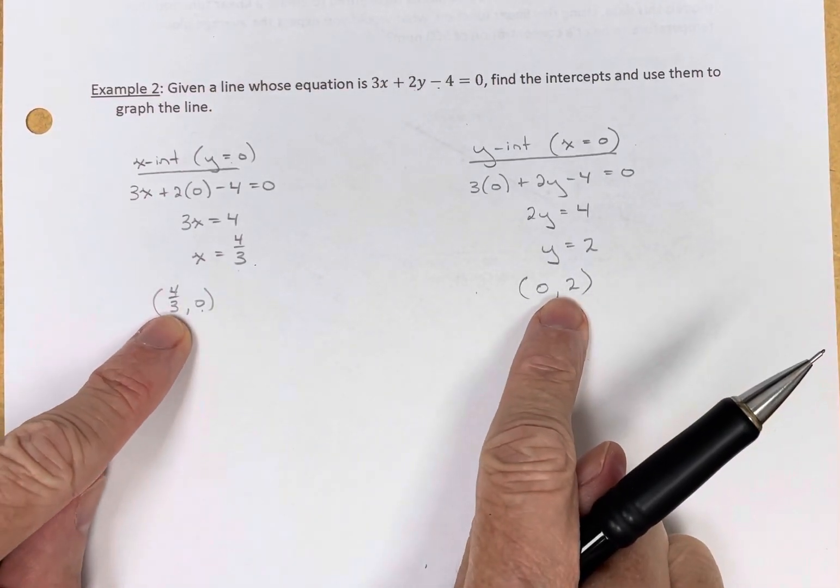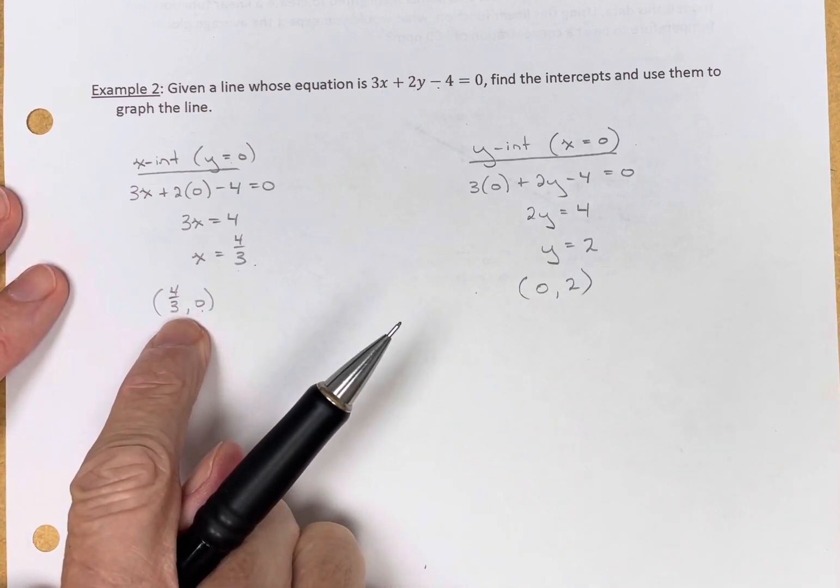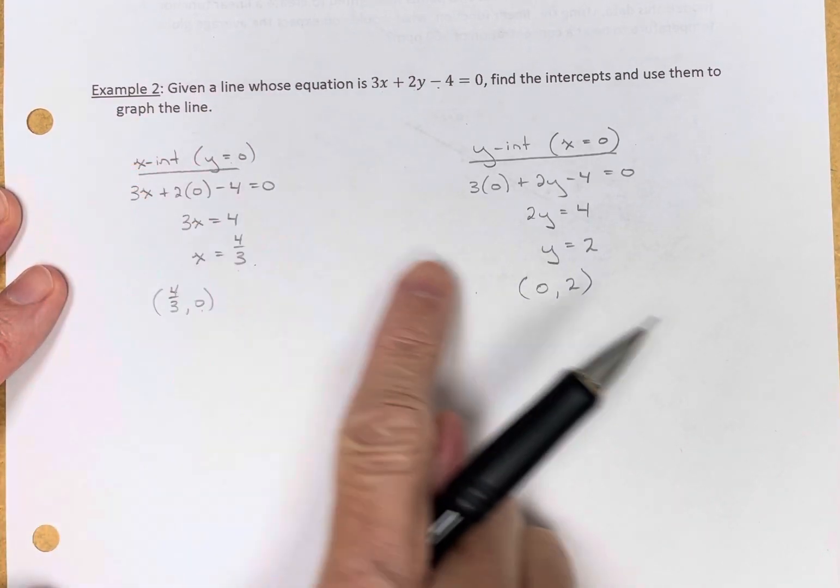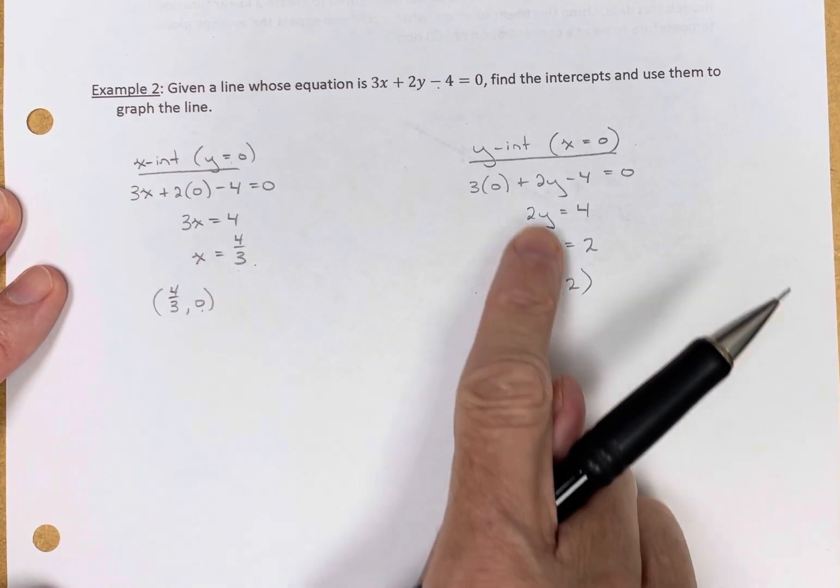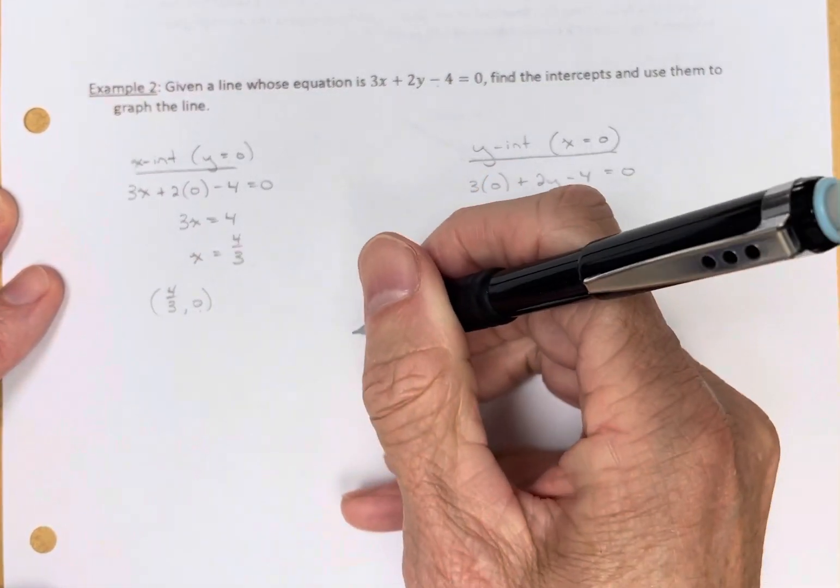So I have two points. This point is on the x-axis, hence it's called the x-intercept. This point is on the y-axis, so it's the y-intercept.